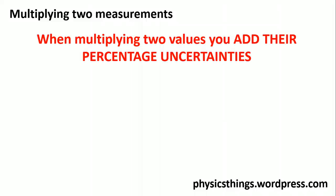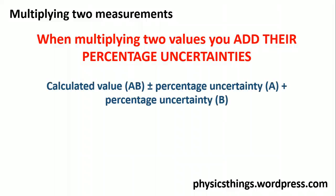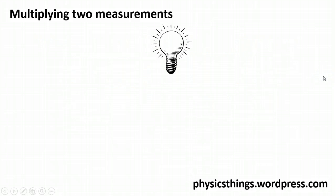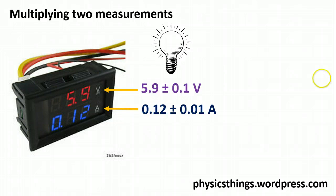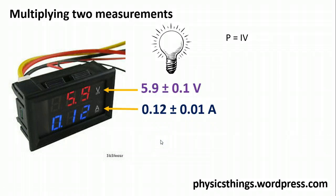What about when we multiply values together? This might seem a little counterintuitive, and you don't need to know the maths of why, but when you multiply two values together you add their percentage uncertainties — similar to what we did with adding or subtracting, but this time using percentage uncertainties rather than absolute uncertainties. For example, a light bulb: we measure a voltage across it in parallel and a current through it in series — voltage at 5.9 ± 0.1 V and current at 0.12 ± 0.01 A.